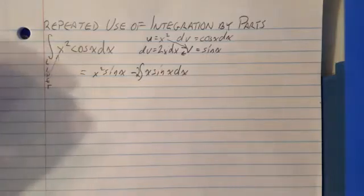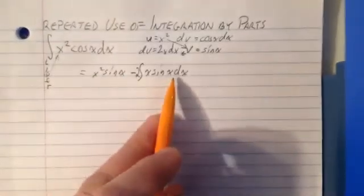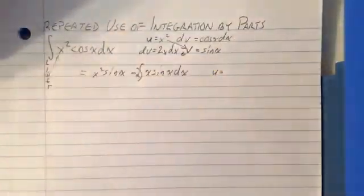So the next thing we want to do is x sine x. We're going to have to use integration by parts there again. So u equals, same thing if we go through LIATE, we're going to end up picking x for u and dv is going to be our sine x dx.